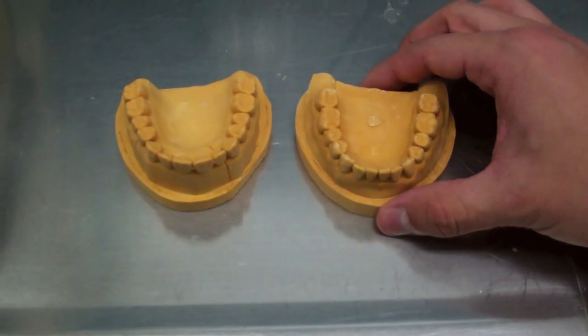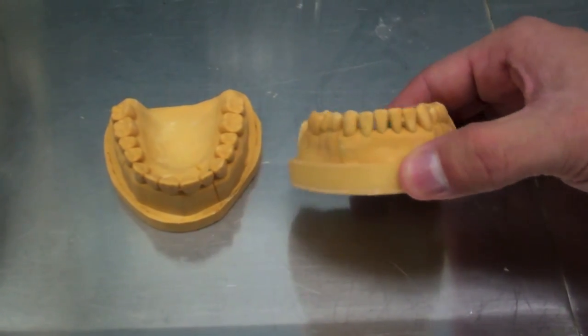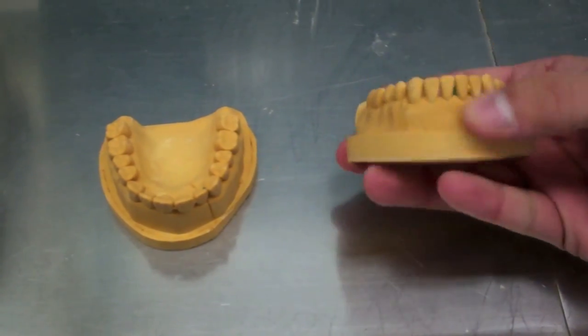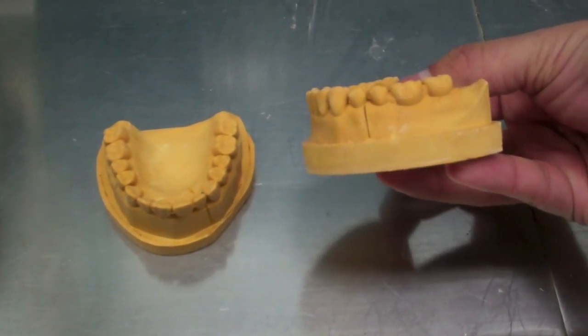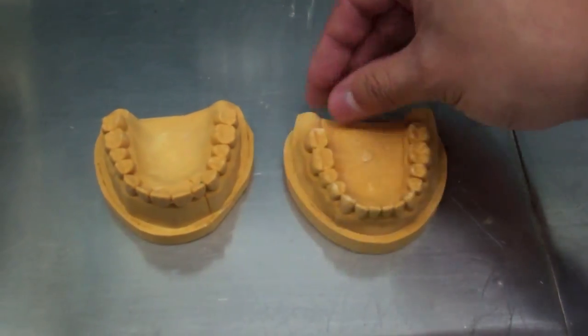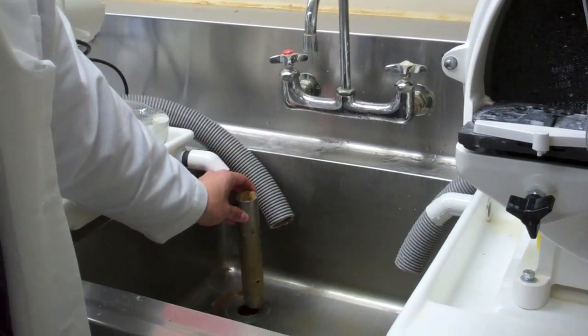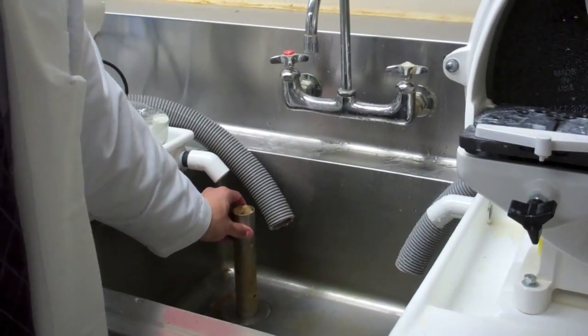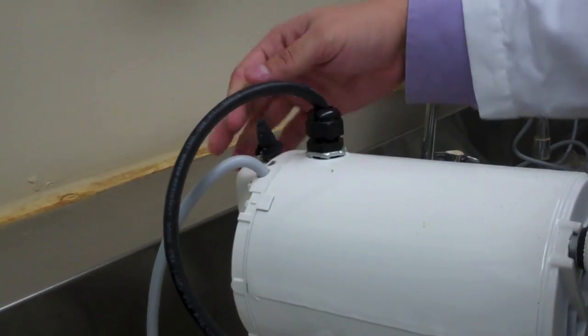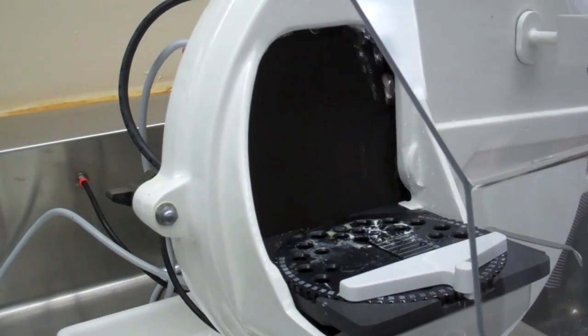After pouring any model, there will be excess stone around the borders that need to be trimmed. This is usually done grossly with a wet model trimmer. First place the pipe in the sink in order to prevent stone from flowing down the drain. Next, turn on the trimmer using a switch in the back. This will also activate the water flow.